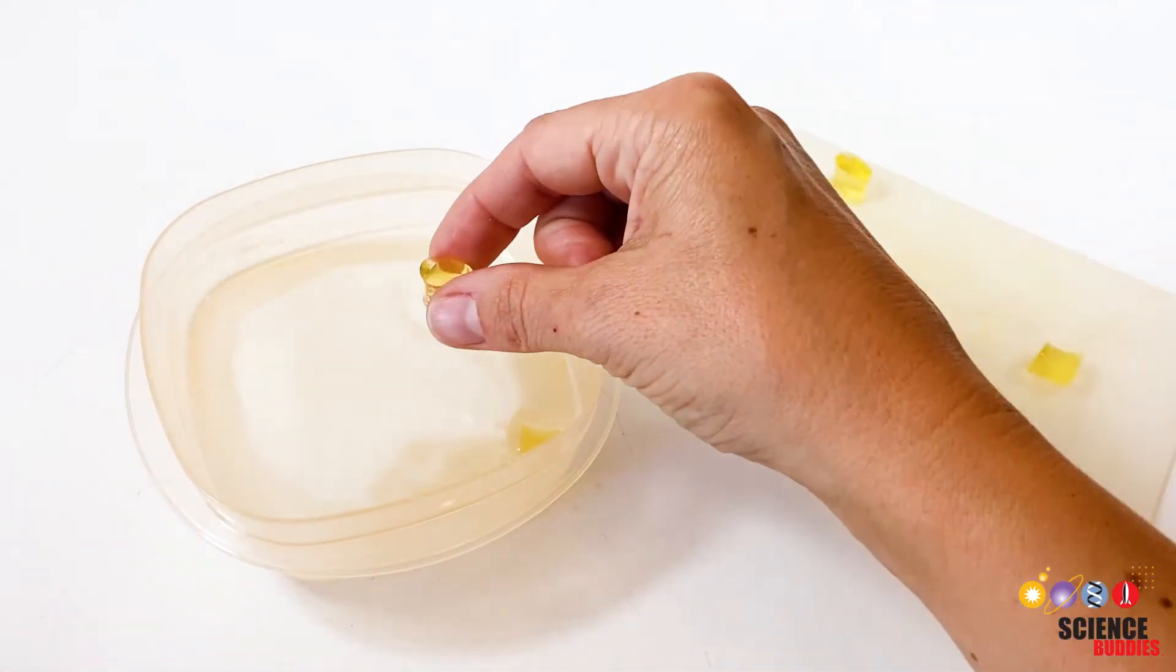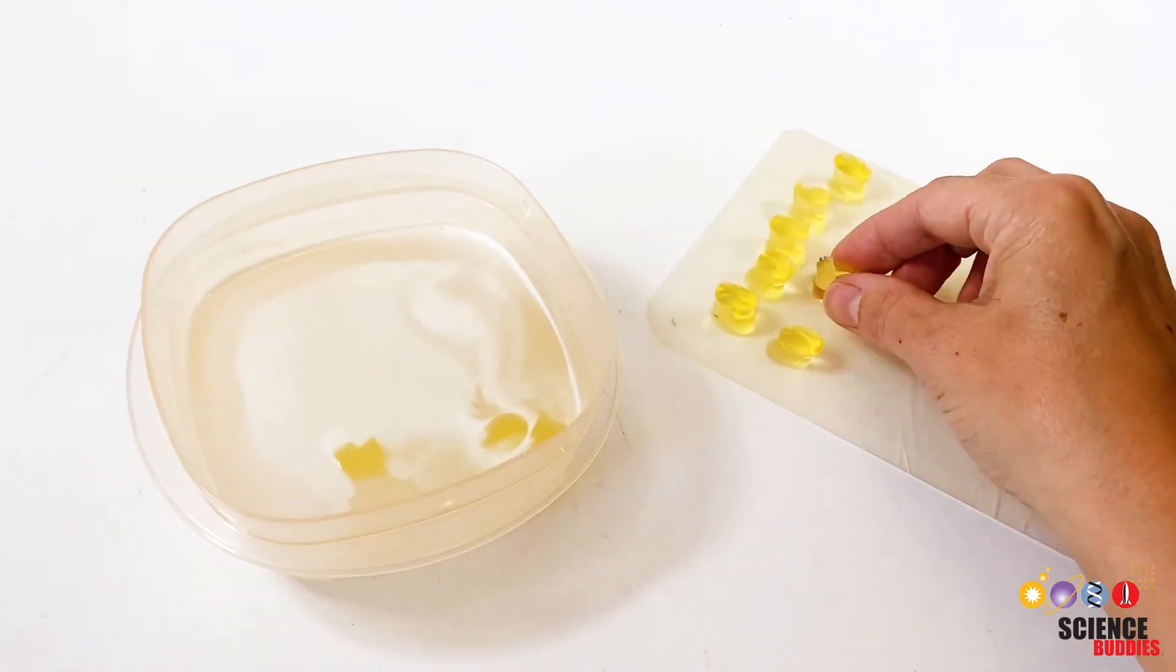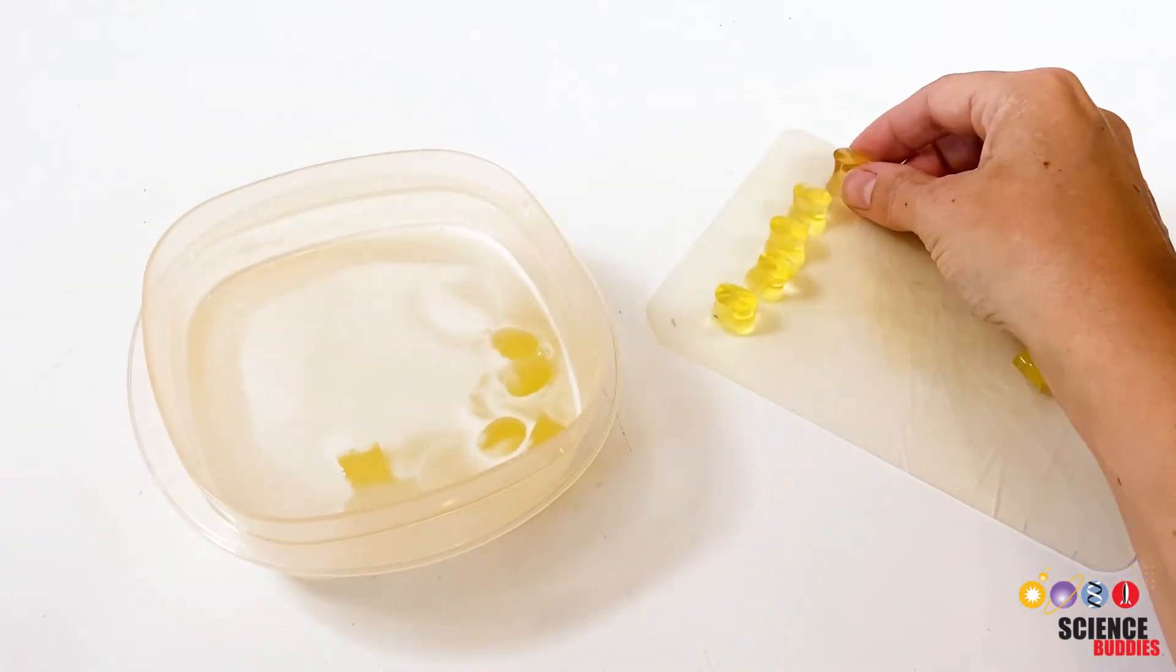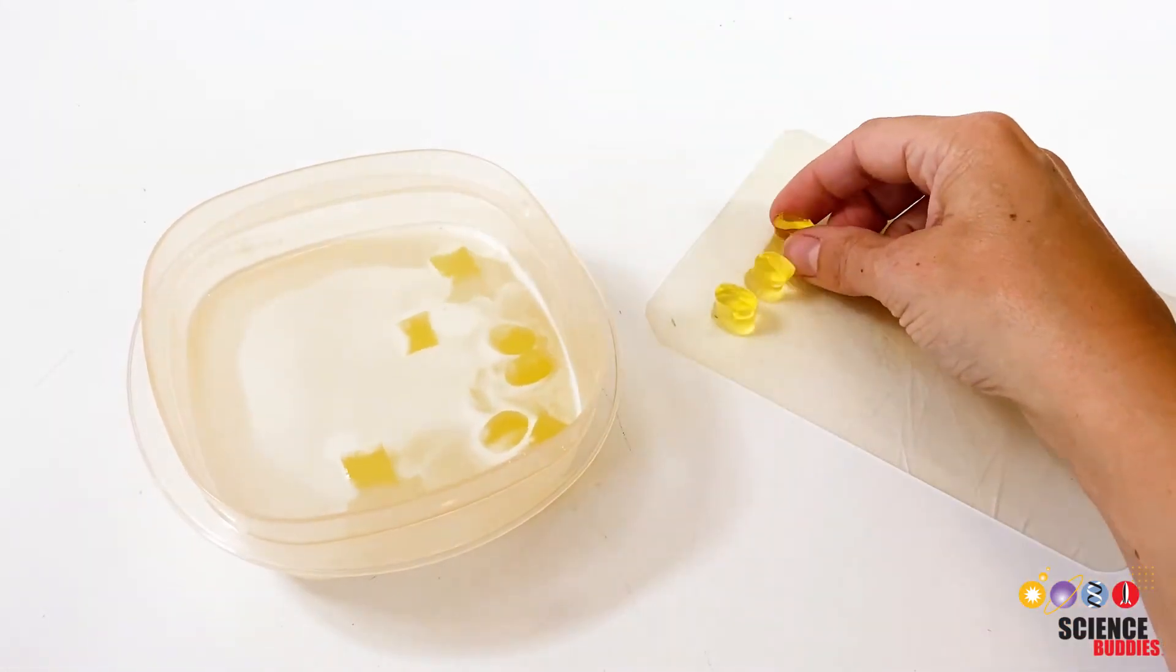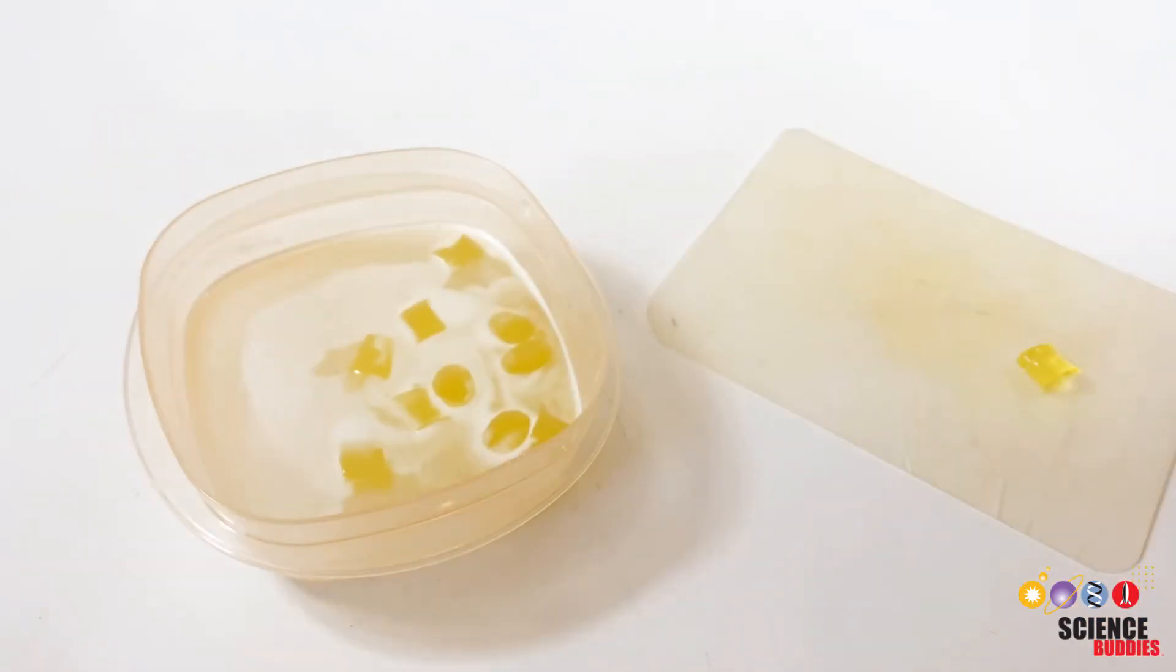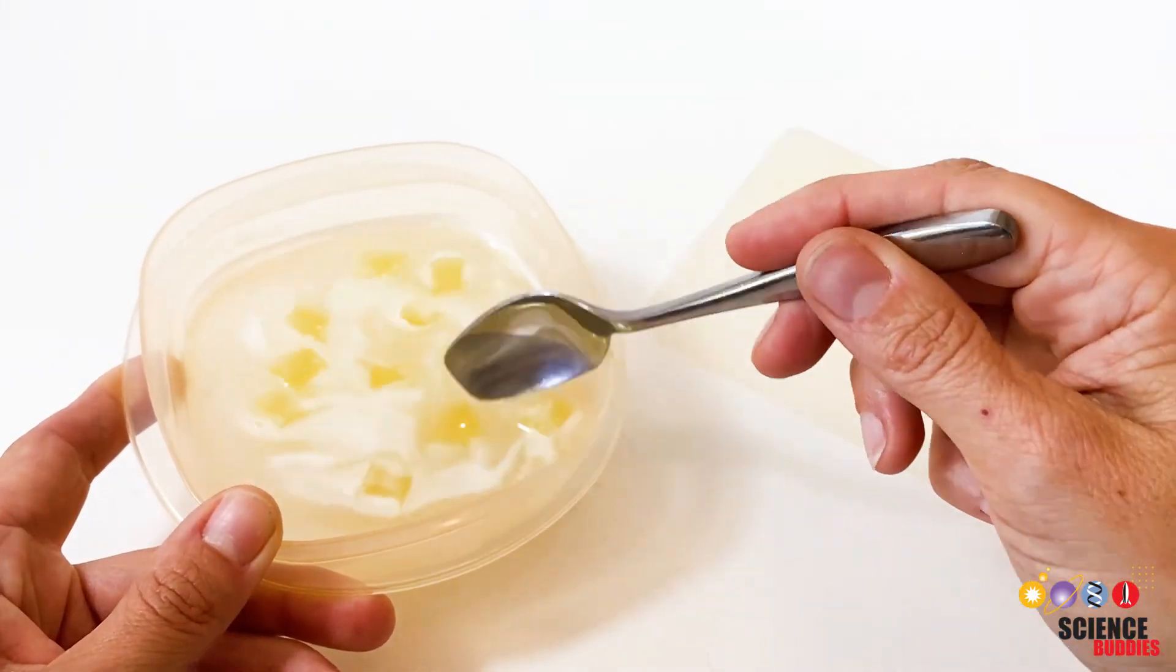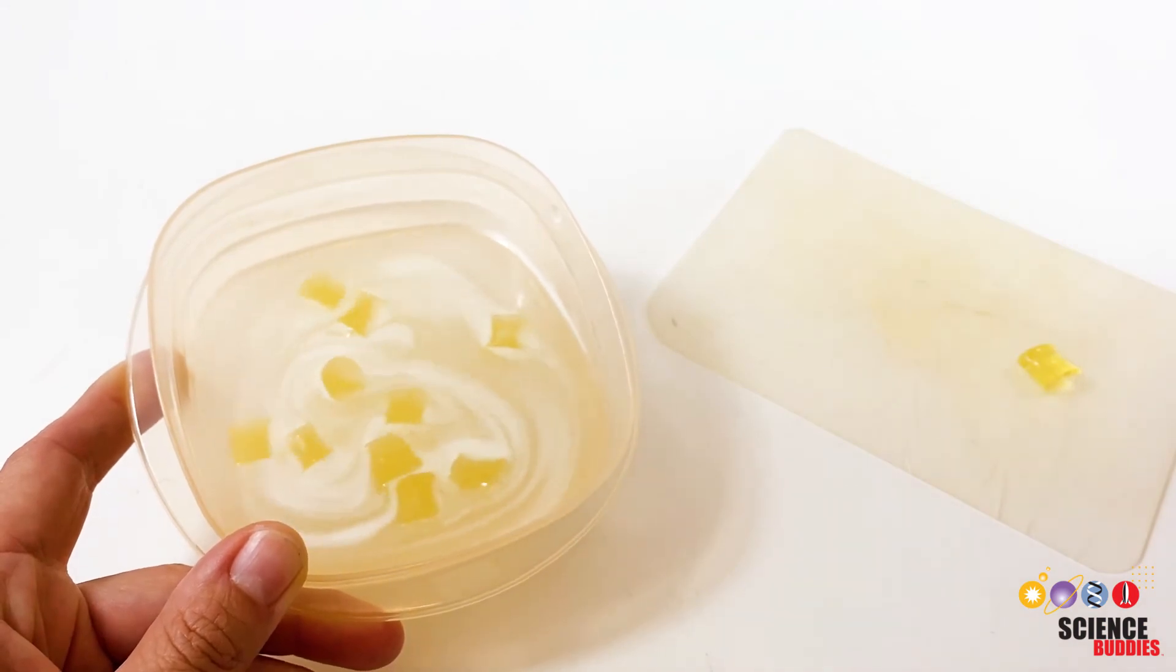Place the remaining 10 jello shapes in the container with the protease solution. Again, make sure all jello shapes are in the solution and are not lying on top of each other. This test models insulin being ingested and passing through the digestive system.